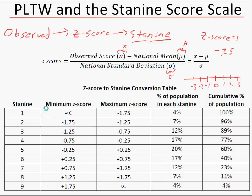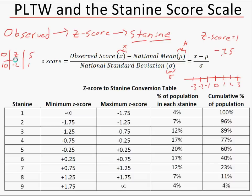All of the negative z-scores are going to be between stanine 1 and 5, and all of the positive z-scores between 5 and 9. You make a list of all students with their observed scores, their z-scores, and then their stanine scores. For example, if a student's observed score was 10, that means their z-score is negative 2, and that means their stanine is going to be a 1 — you just find where it falls in the bucket.